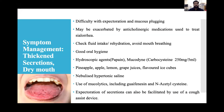Dry mouth, difficulty with expectoration, and mucous plugging may be exacerbated by anticholinergic medications used to treat sialorrhea. Management: check fluid intake, rehydration, avoid mouth breathing, maintain good oral hygiene. Mucolytic agents: papain, mucidine, carbocysteine 250 mg per 5 ml. Natural remedies: pineapple, apple, lemon, cranberry juice, or flavored ice cubes. Nebulized hypertonic saline. Mucolytics include guaifenesin and N-acetylcysteine. Cough-assist devices can also facilitate expectoration.